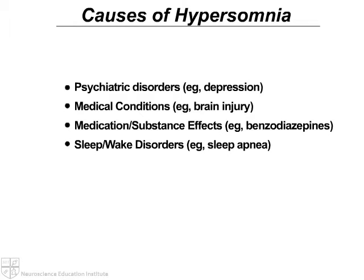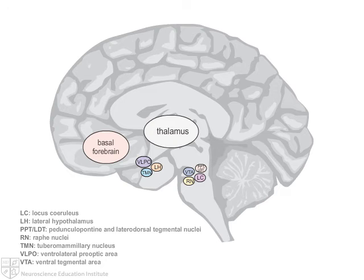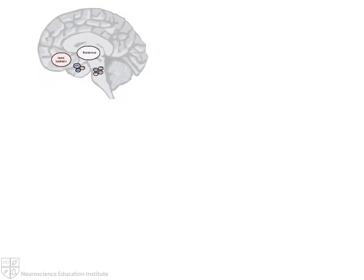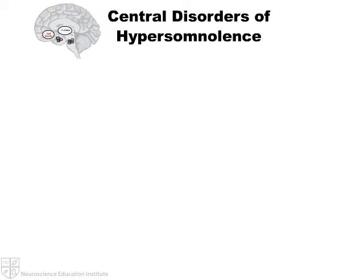However, there are several disorders of hypersomnia that are not secondary to these other conditions and are thought to arise as a consequence of neuropathology within the sleep-wake circuitry of the brain. Such disorders are known as central disorders of hypersomnolence.